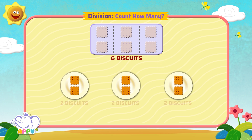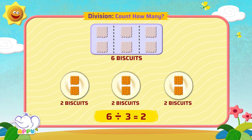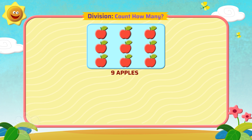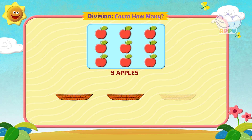Each plate will get two biscuits, so six divided by three equals two. Exactly right! Now divide nine apples equally into three baskets. How many apples will be there in each basket?